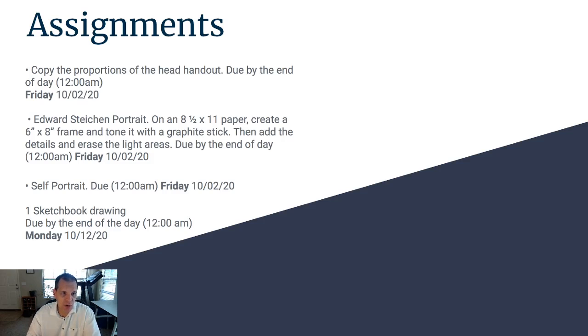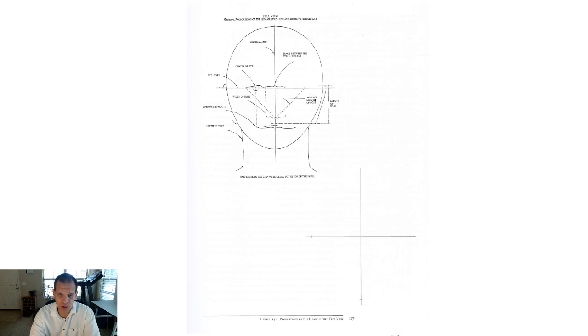The first assignment is to copy the proportions from this handout, which is the proportions of the front of the human face. Go ahead and utilize the crosshairs. You'll see the crosshairs here on the lower part of the page and then all of the proportions on the top left. All you have to do is follow those proportions and make an oval and then start copying all the information that's on the top onto the bottom image here. You don't necessarily have to write the information, but I want you to copy the information that's on there and take note of what that information is saying and the relationship of the different parts of the human face in a front view.